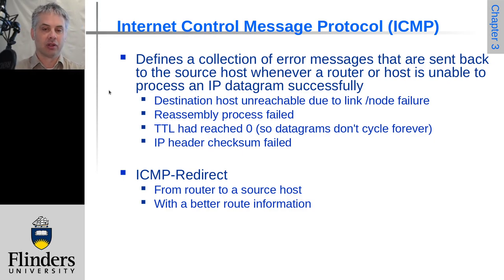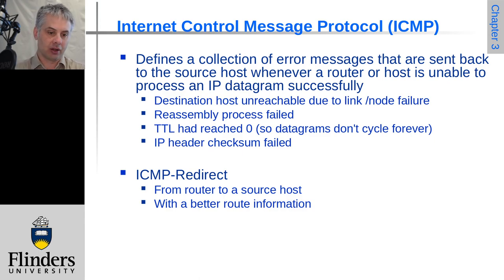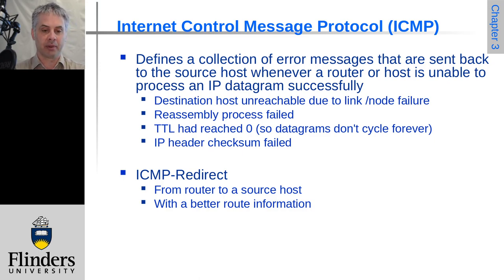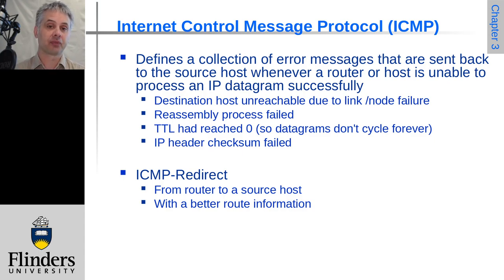ICMP is designed to provide information about the state and operation of the network. For example, you can get an ICMP response saying the host is unreachable — if ARP is not able to resolve the host, or the network discovers it can't provide connectivity to a particular host, that can be reported back via an ICMP message. If the reassembly process for a packet has failed, that can also be indicated via ICMP.